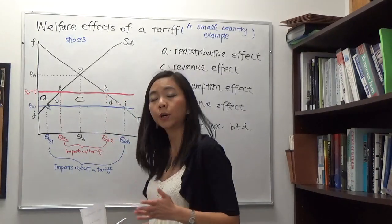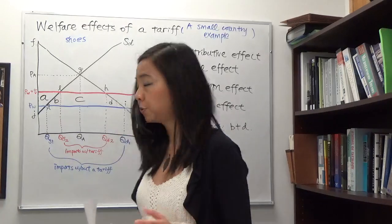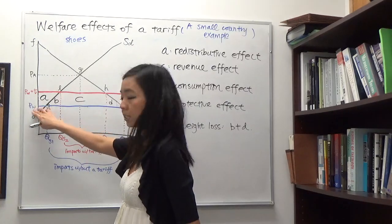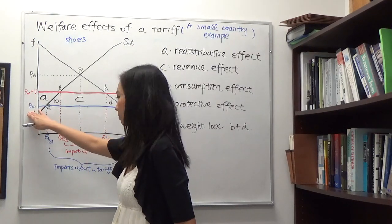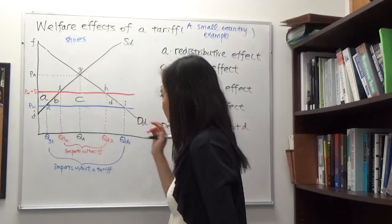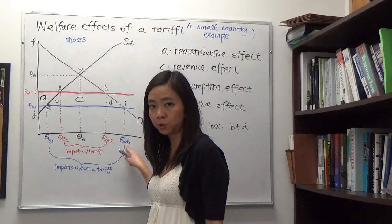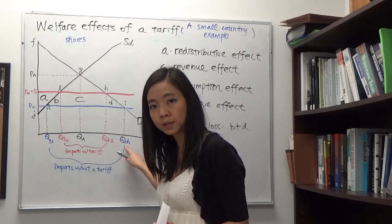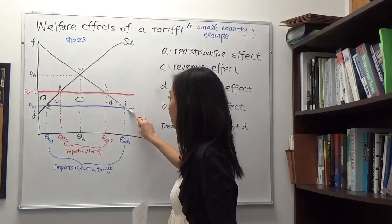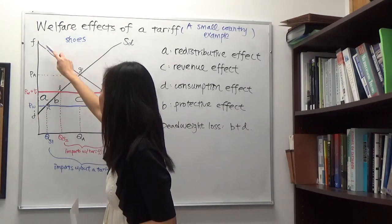We want to look at the welfare of consumers by examining consumer surplus. Consumer surplus is the area below the demand curve, above the price paid by the consumer, which is now PW with trade and without a tariff. The base of the triangle runs from zero to the quantity demanded, now QD1. You can see consumer surplus has increased quite a bit — the new consumer surplus with trade is area triangle F-I-PW.